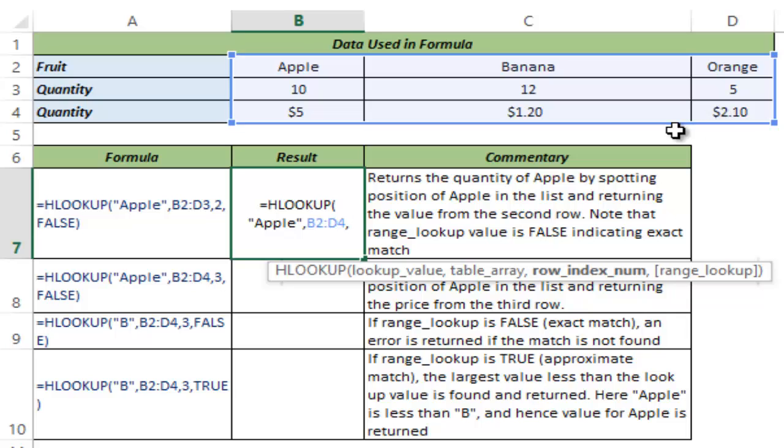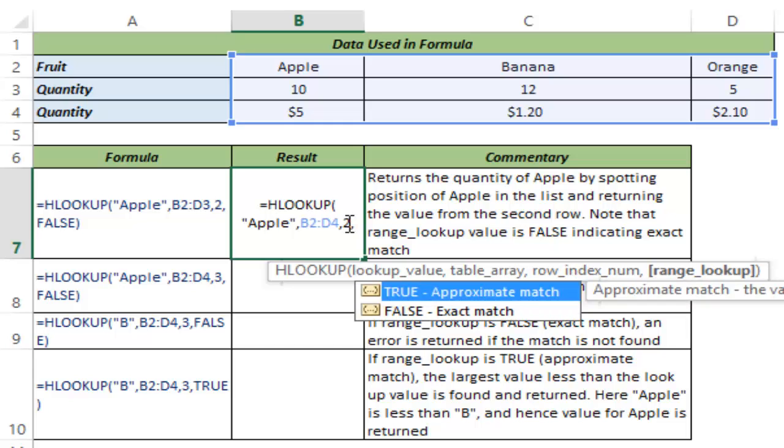As index number I give 2 so I tell it that you go and look for apple here in this array and when you find that exact match apple then you go to the second row and fetch the value against apple and here I want an exact match so I would use FALSE.